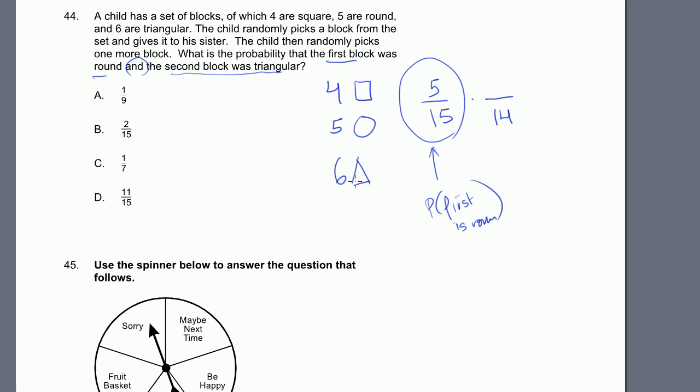And this is an and. So what is the probability that the second block is triangular given that the first block was a circle? So we assume that we still have our full contingency of six triangles there. So the probability the second block triangular, there's six triangles out of the 14 blocks left. So our answer is going to be 5 over 15, which is the same thing as 1 third, times 6 over 14 is the same thing as 3 over 7, which is the same thing as 1 over 7. And that is choice C.